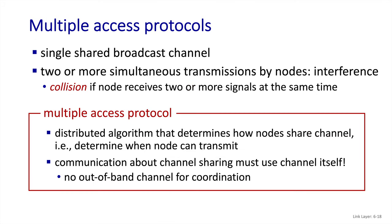To nail down the problem we're addressing: if we have a shared medium and more than one device wants to transmit, if their transmissions overlap, they will have a collision and the receivers will not be able to understand either transmission. So a multiple access protocol determines how this shared medium will be used by multiple transmitters in a way that avoids collisions. We also have to note that this is an in-band protocol, so the multiple access protocol uses the channel to determine how to use the channel, which presents a number of interesting engineering trade-offs.